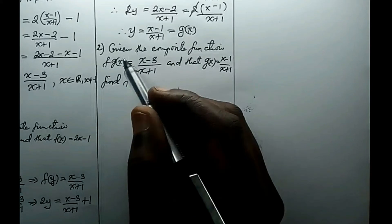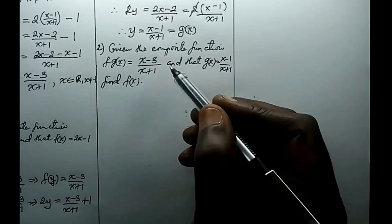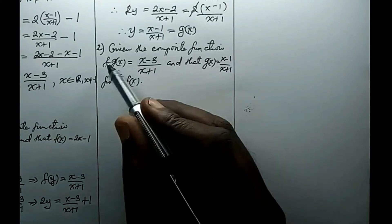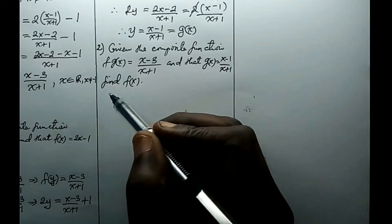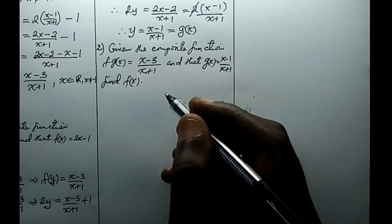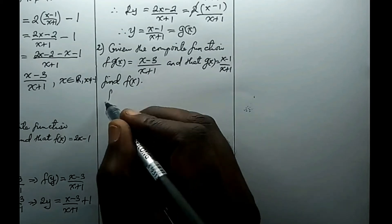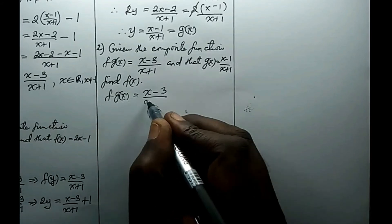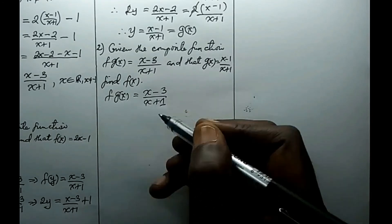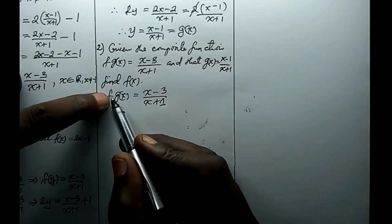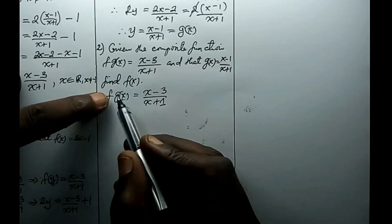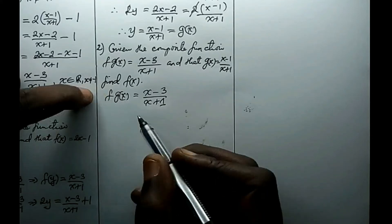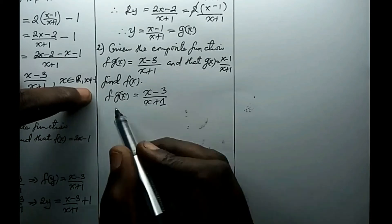In the second case, you might instead be given the composite function fg of x and g of x — the function in the first command — and then f of x, the function in the second command, is what's asked. Again, we start with fg of x equals x minus 3 all over x plus 1. We need to find f of x, so to do that we need to eliminate g of x. To eliminate g of x, we simply find the inverse of g of x and substitute it into the expression.